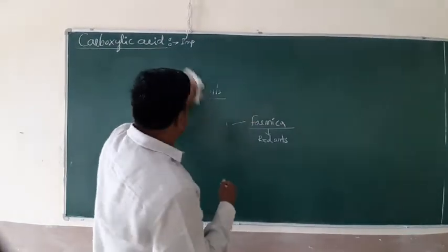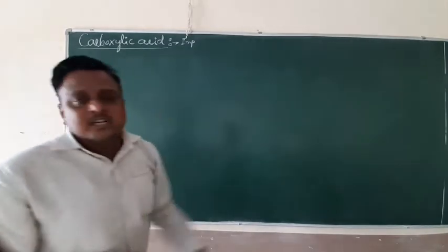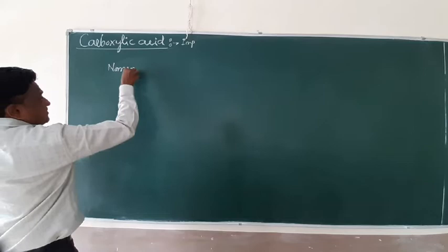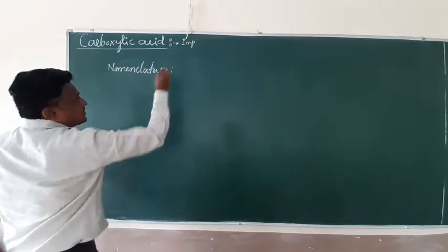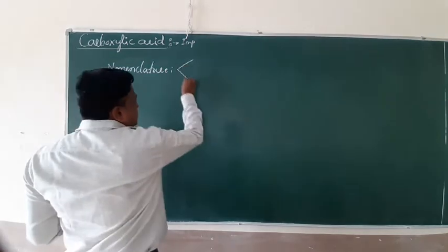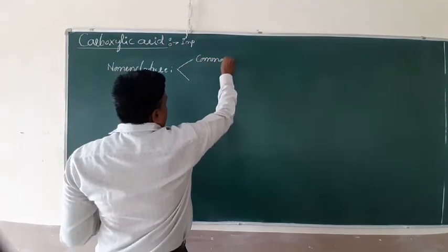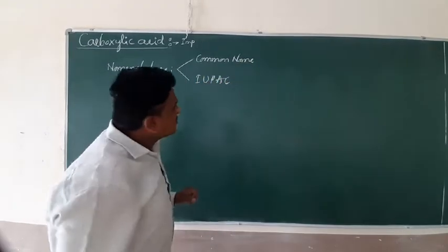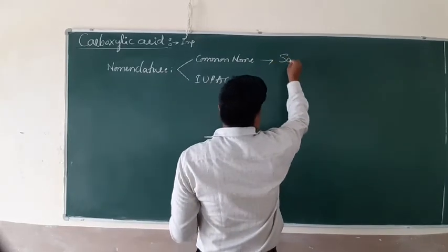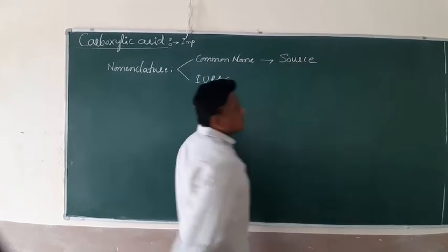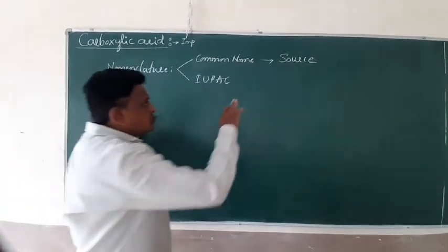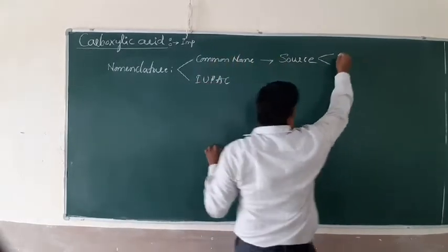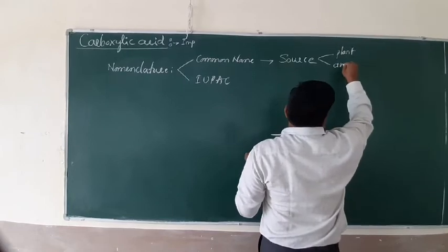So dear friends, in the carboxylic acid, already we know it is derived from plants and animals. And what about its nomenclature, it is very important. You know, organic chemistry, already we know there are two types of nomenclature. One is a common name, and another one is IUPAC. Based on the common name, this is completely based on their source, the source is coming from either a plant or an animal.